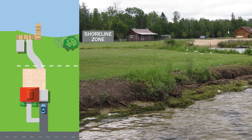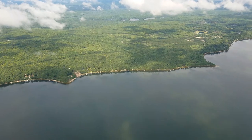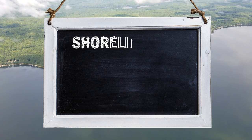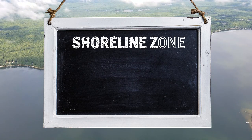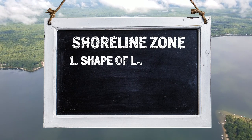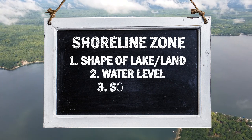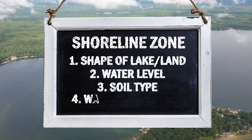The shoreline zone is a transitional area between the land and water. It begins at the top of the lake bank called the shoulder and extends to where the land meets the water, known as the toe. The shoreline zone will look different for every property. The shape of your property's shoreline zone will vary based on factors such as the shape of the lake and the land, the water level, soil type, and wave and wind energy.